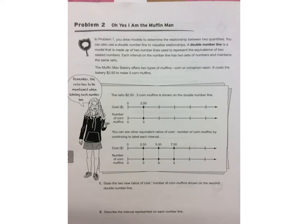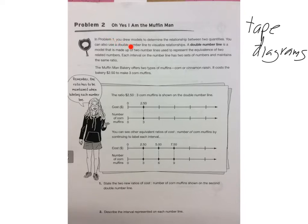In this lesson, we're going to go over using these things called a double number line. Ms. Rogers calls them tape diagrams. It's just a way to look at ratios. The double number line is a model made of two number lines used to represent the equivalents of two related numbers. Each interval on the number line has two sets of numbers and maintains the same ratio.